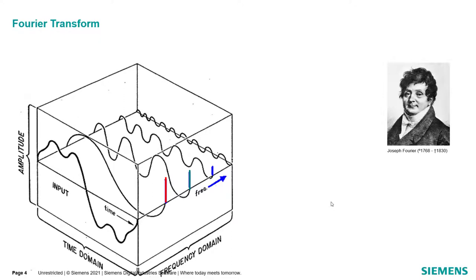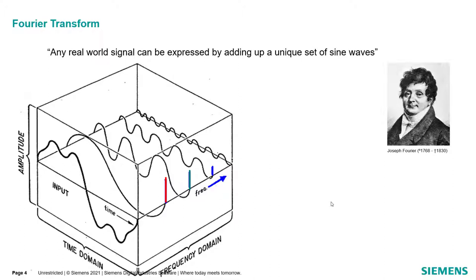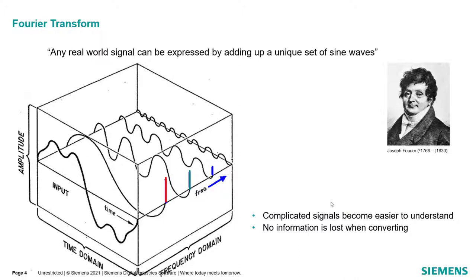To understand things first, let's talk about Joseph Fourier, shown on the screen. He came up with the Fourier transform, which lets us convert any real-world measured signal into a unique combination of sine waves. We can then look at these sine waves in the frequency domain to get more information from our measurements. The nice thing is no information is lost when converting from the time domain to the frequency domain — and we can convert back without losing any information.